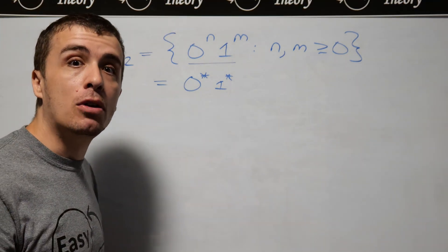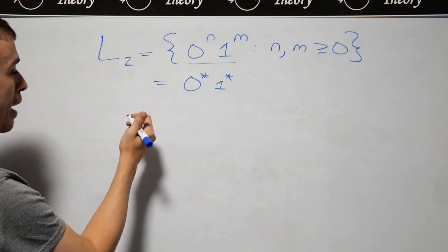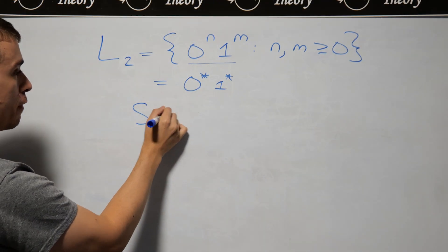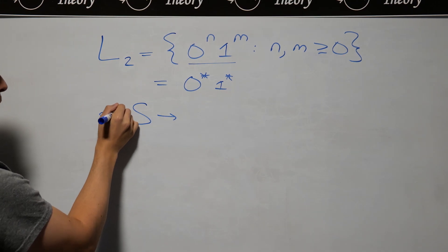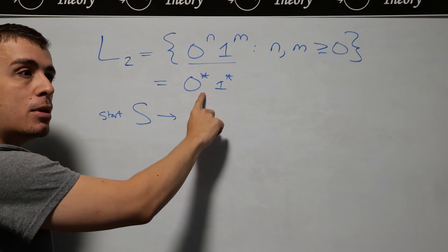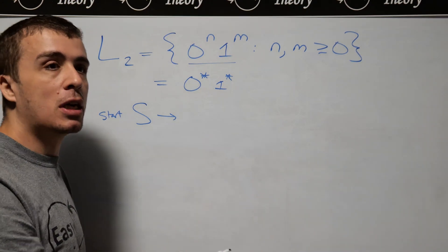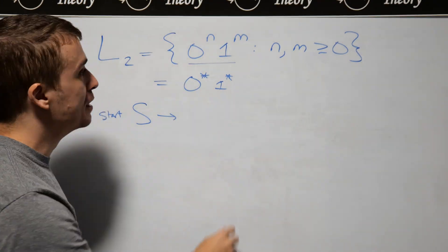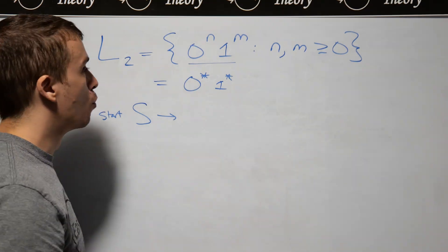So every context-free grammar needs a start variable. Let's make a start variable right here. And then what we want is that we need to generate some number of zeros, and then once we're done generating the zeros, whatever that means, we need to be able to generate some ones.